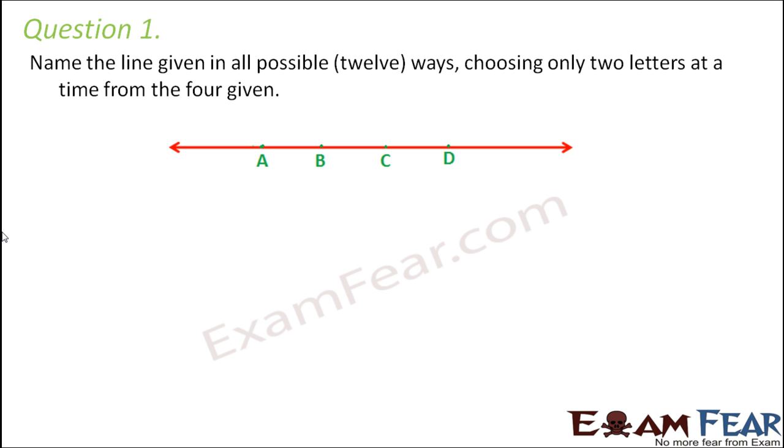So what do you see on the screen? On the screen we see a line because we have arrows on both ends which tells that it extends indefinitely on both the directions, but we have certain fixed points which has divided the line into smaller line segments. Now what we need to do is we need to name the line in all possible ways. So what are the different ways by which we can name this line?